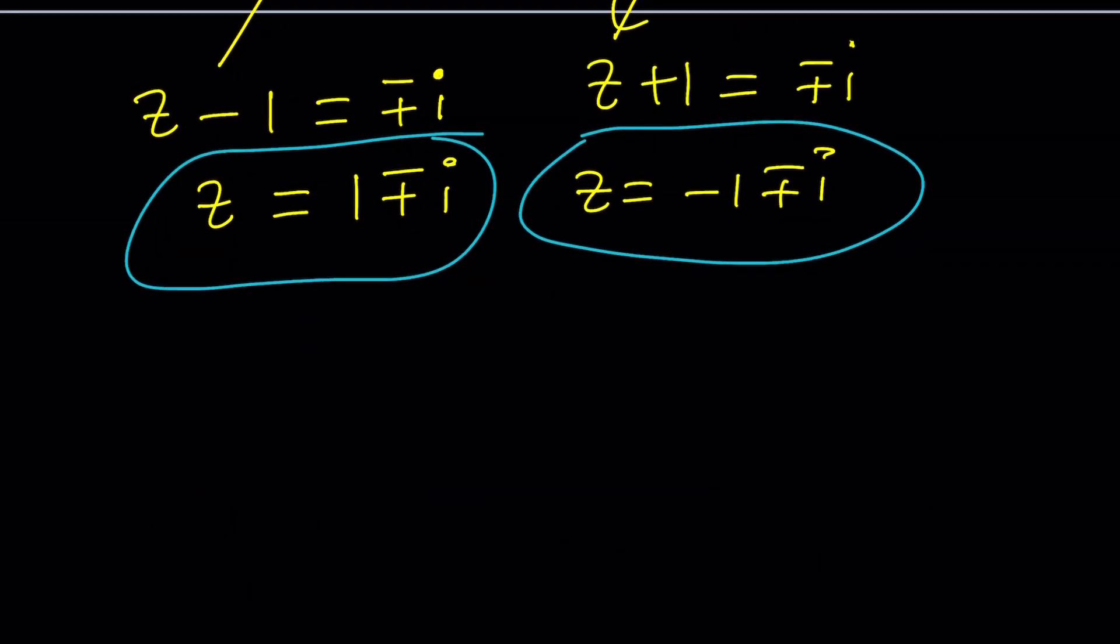So if you wanted to write all these solutions separately, you could write negative 1 minus i, negative 1 plus i, and then 1 minus i, and then 1 plus i. That's going to be our solution set. And this brings us to the end of the first method. Not to the end of the video yet. So hang in there. And now we're going to take a look at the second method.